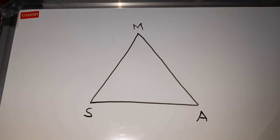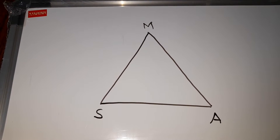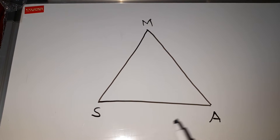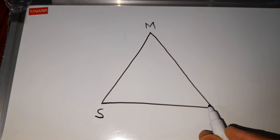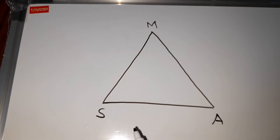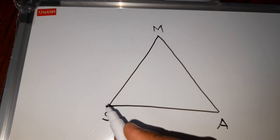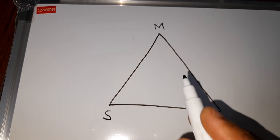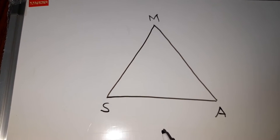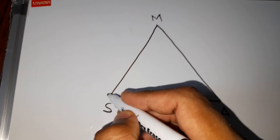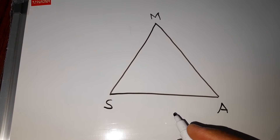Let us go back to the definition of circumcenter. What is circumcenter? Circumcenter is a point which lies equidistant from all the three corners or vertices of the triangle. Whenever we talk of a point which is equidistant from all the three corners or vertices of the triangle, we call that point the circumcenter. When we have the circumcenter, we can draw a circle passing through all three points.